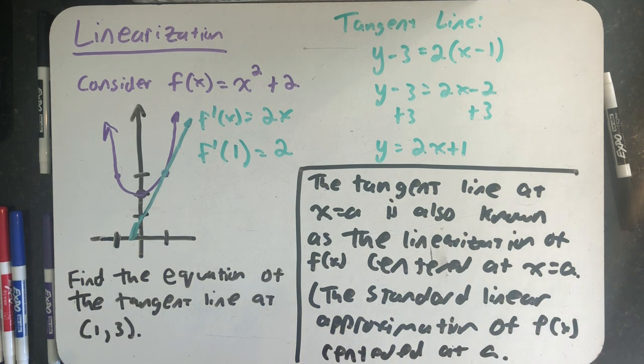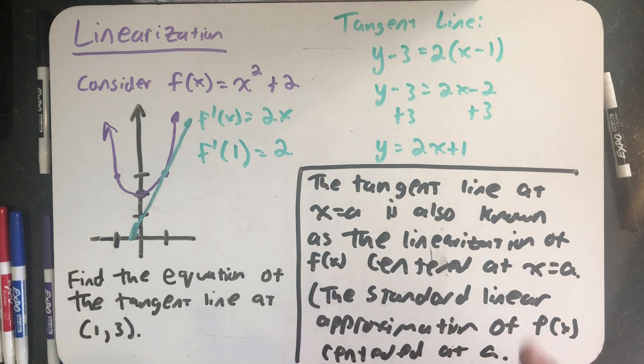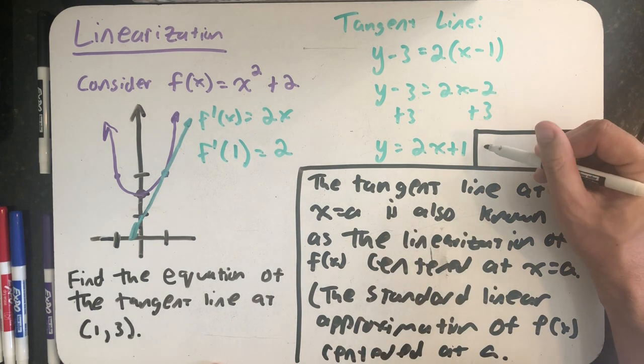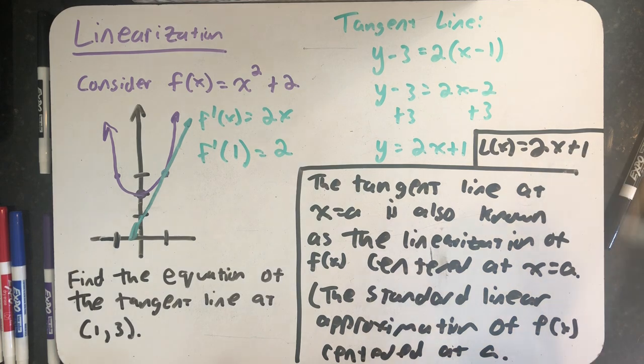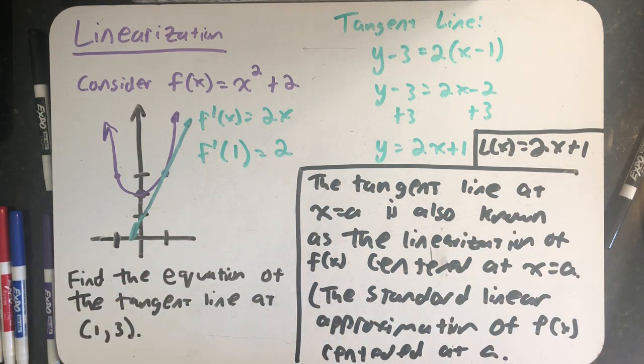One of the points I want to make is that if someone asks you to find a linearization of a function or asks you for a standard linear approximation, all you are doing is finding the equation of a tangent line, and that's a skill we already have. The only difference is most of the time if we tell someone a linearization, instead of saying y equals, we write L of x equals. The linearization of x is 2x plus 1. But every time someone asks you for a linearization, I want you to remind yourself you're looking for the equation of a tangent line.